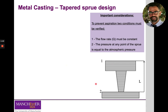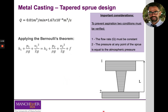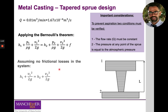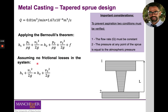The first thing we need to do is to convert the volume flow rate from cubic metres per minute to cubic metres per second. Now we can apply the Bernoulli theorem to calculate the velocity at the exit of the sprue. This theorem can be further simplified if we assume no frictional losses along the sprue and that the pressure at any point is atmospheric pressure. Doing so, we obtain a simplified equation.